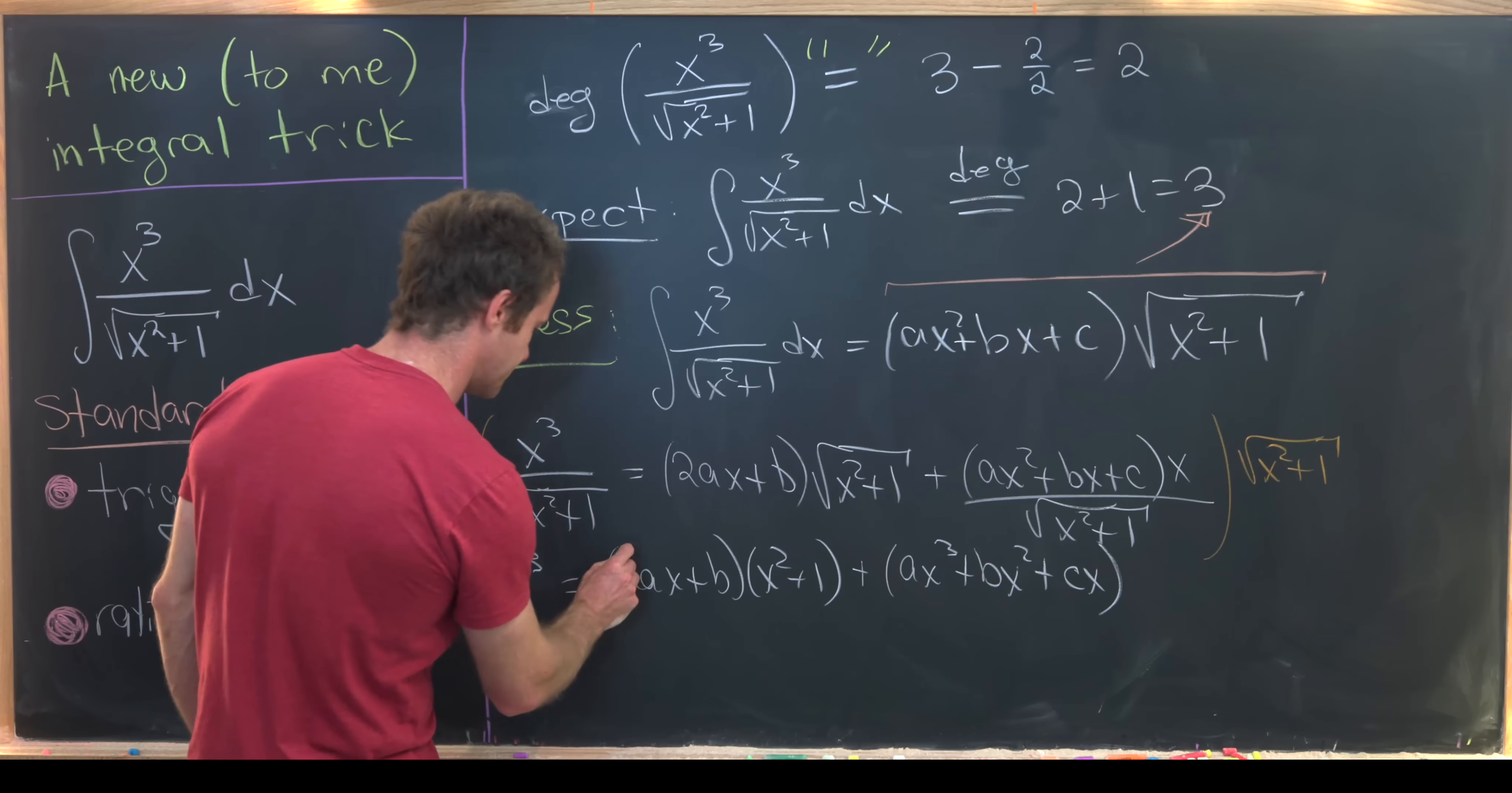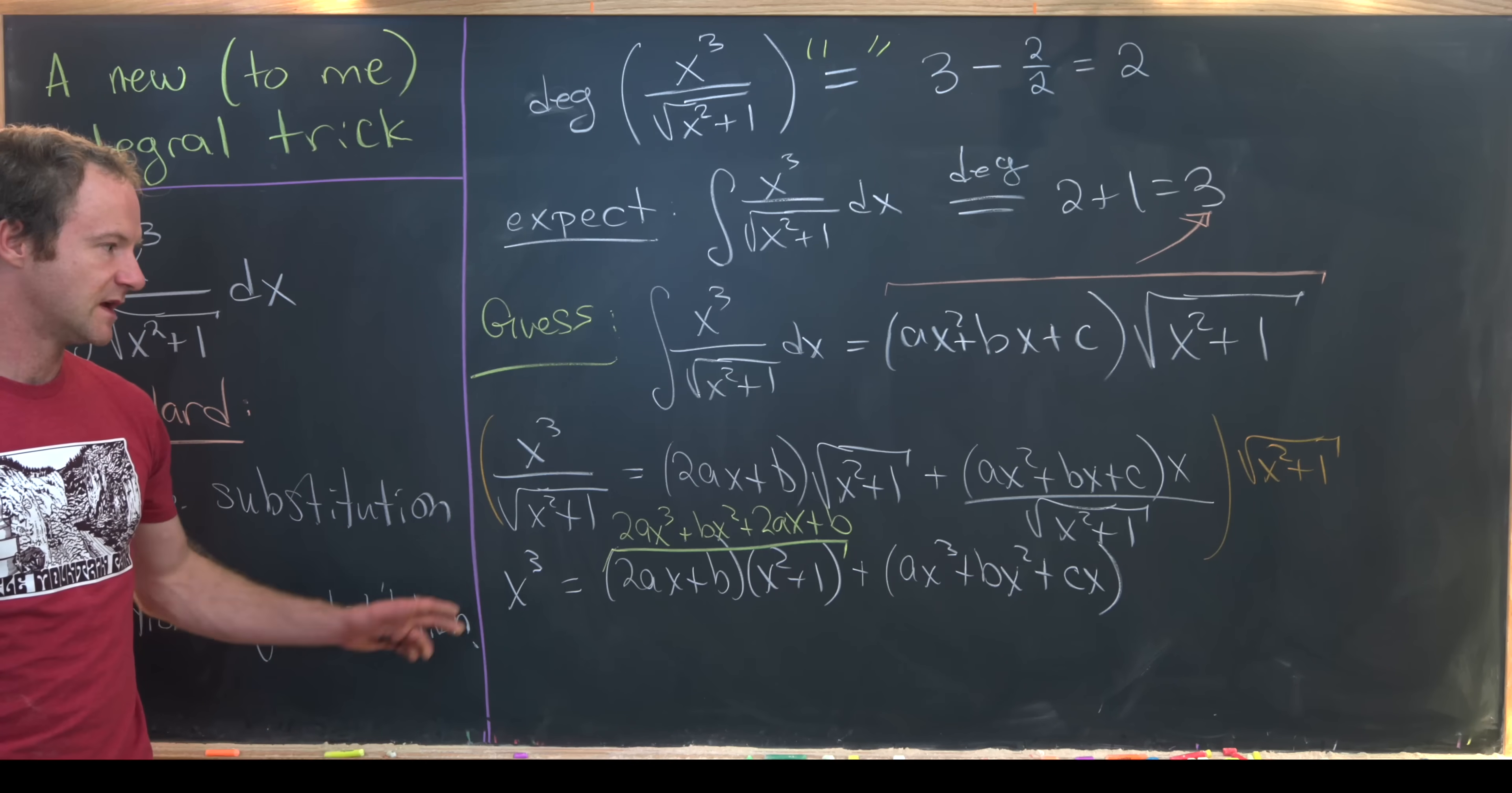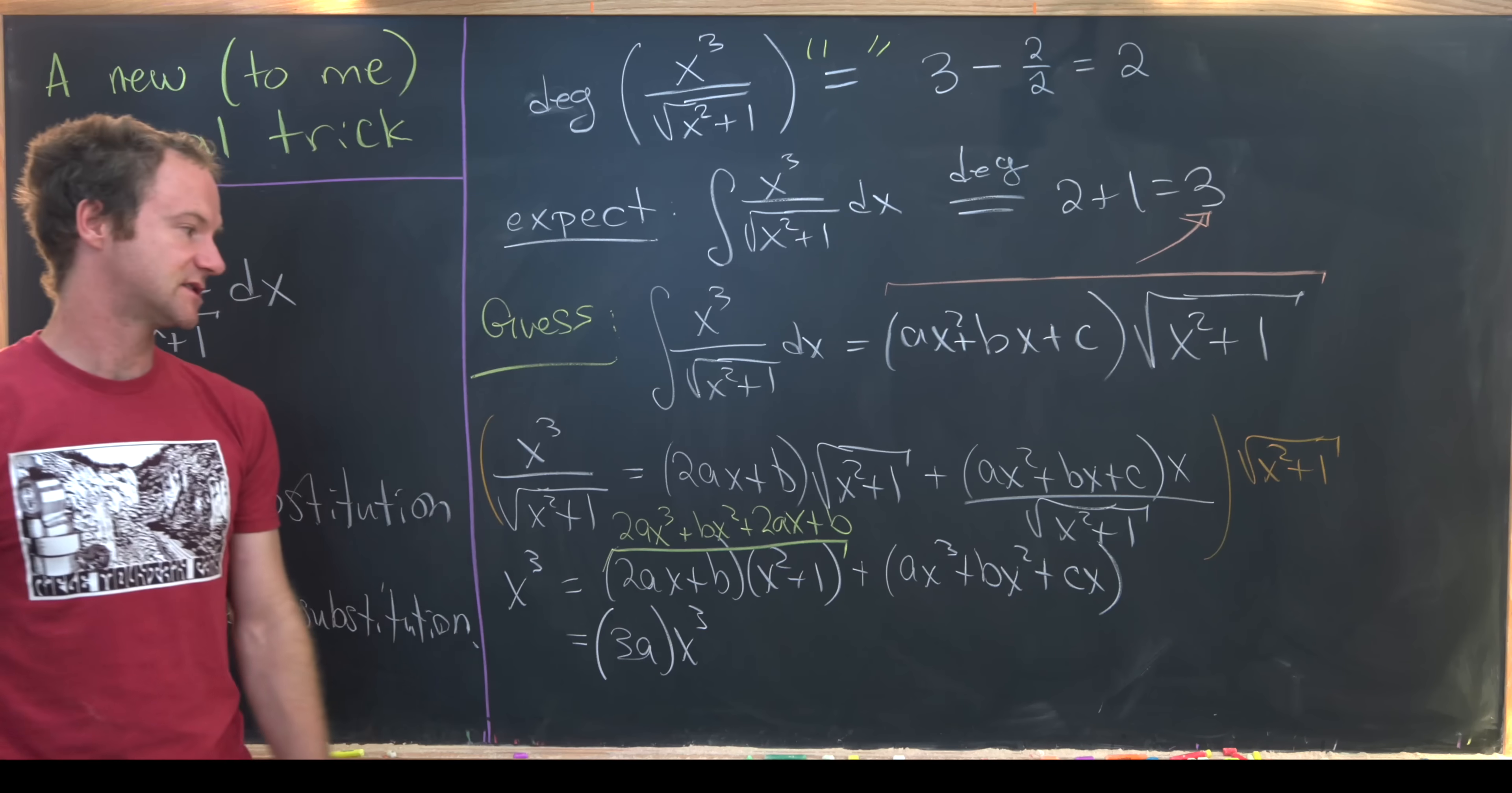Now what we can do is maybe multiply this out. That'll give us 2ax cubed and then plus bx squared plus 2ax plus b. That's what we get from multiplying that out. And now let's combine like terms. So notice the coefficient of x cubed over here on the right-hand side is 3a. So we have 3a times x cubed.